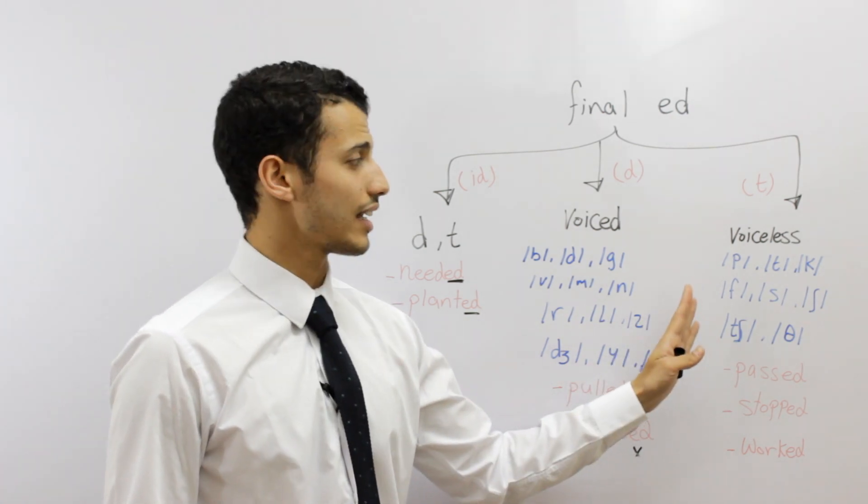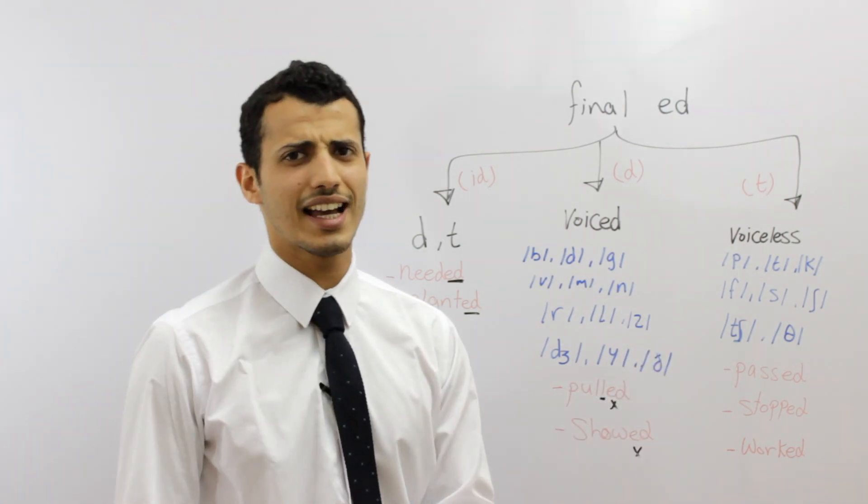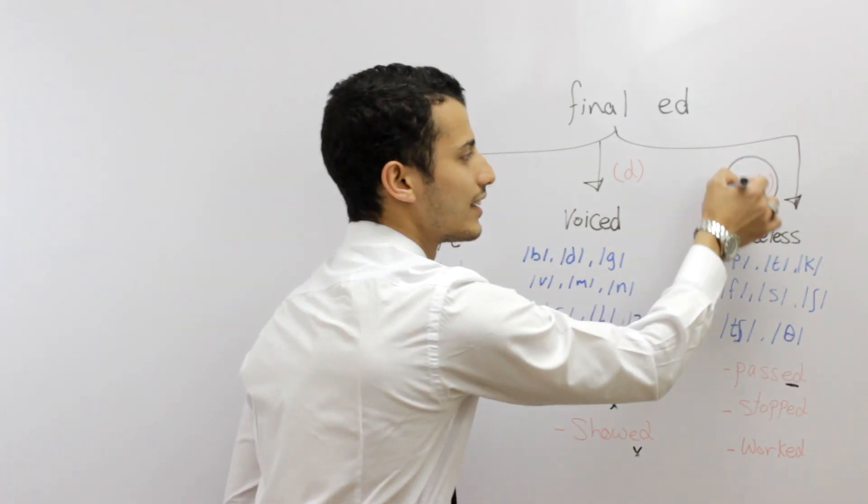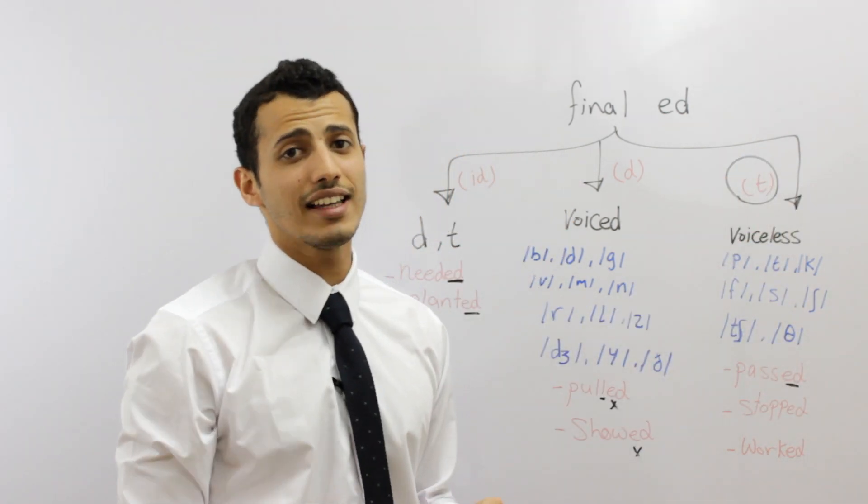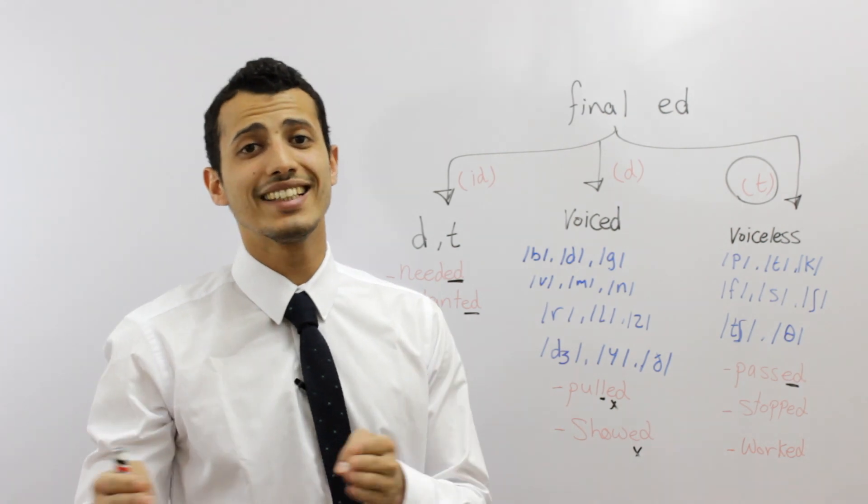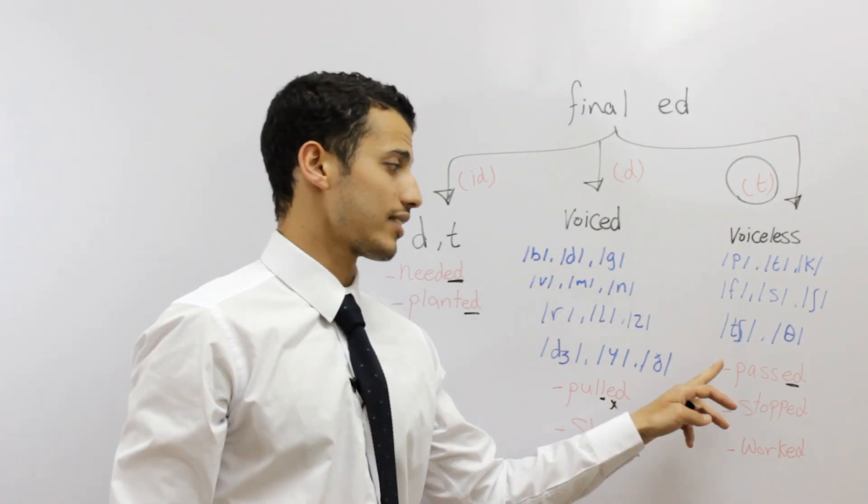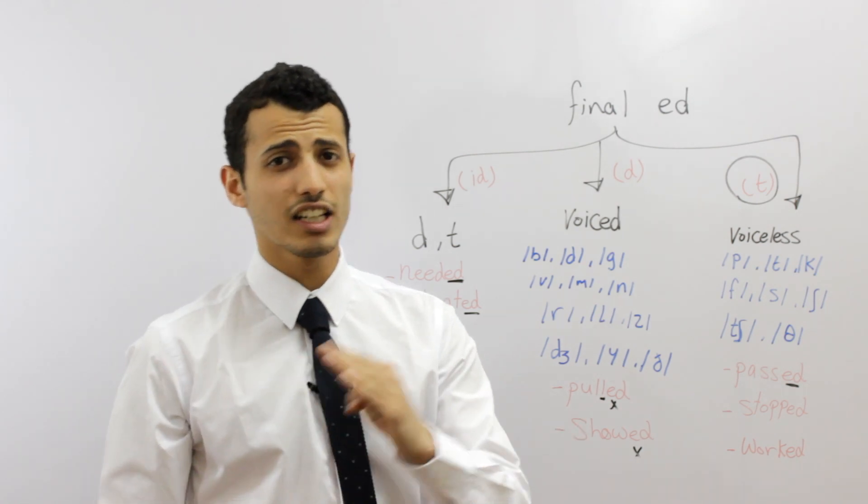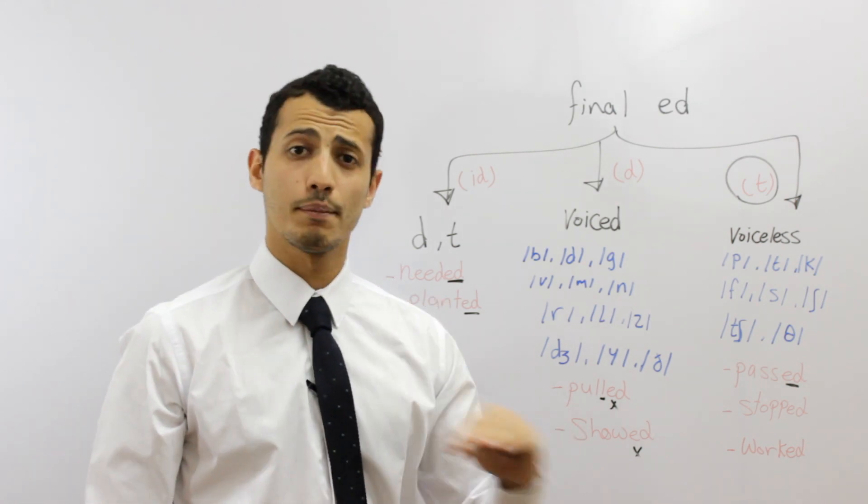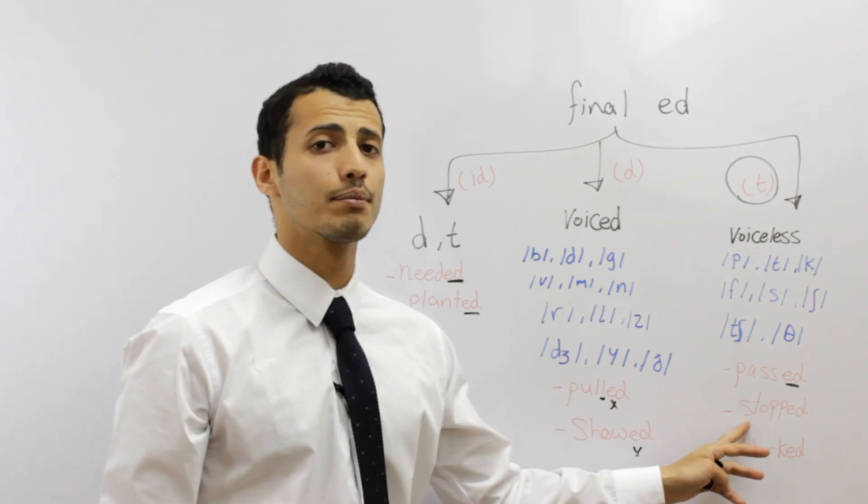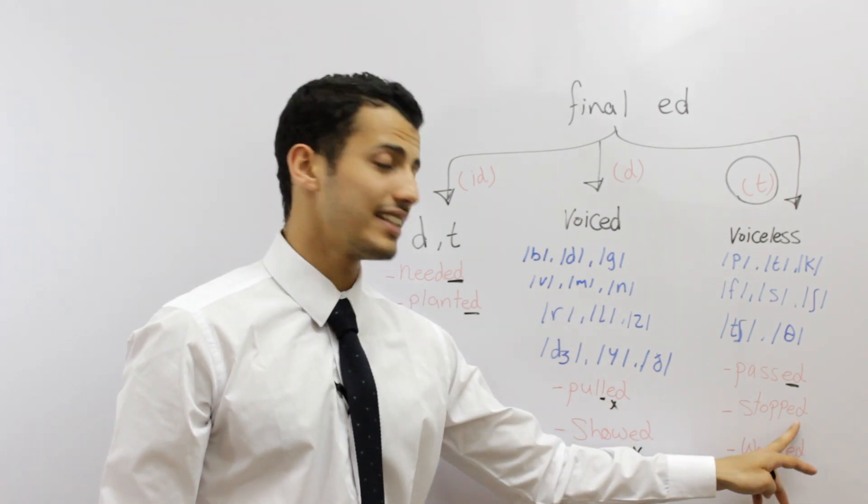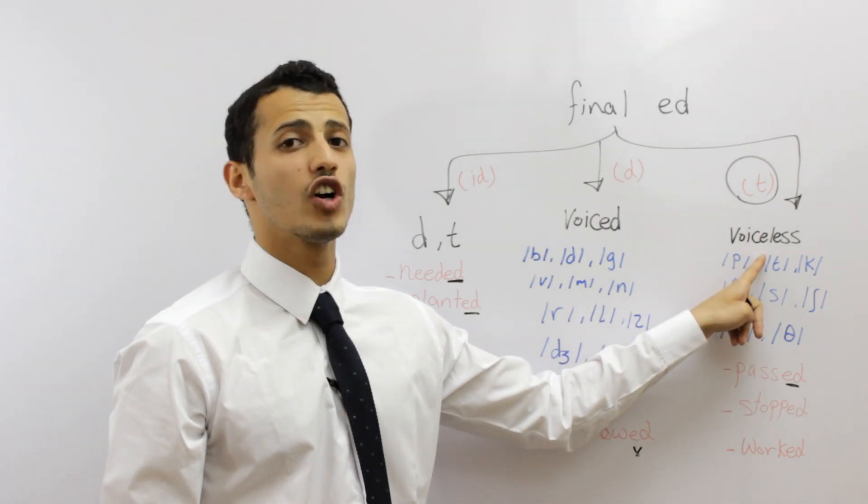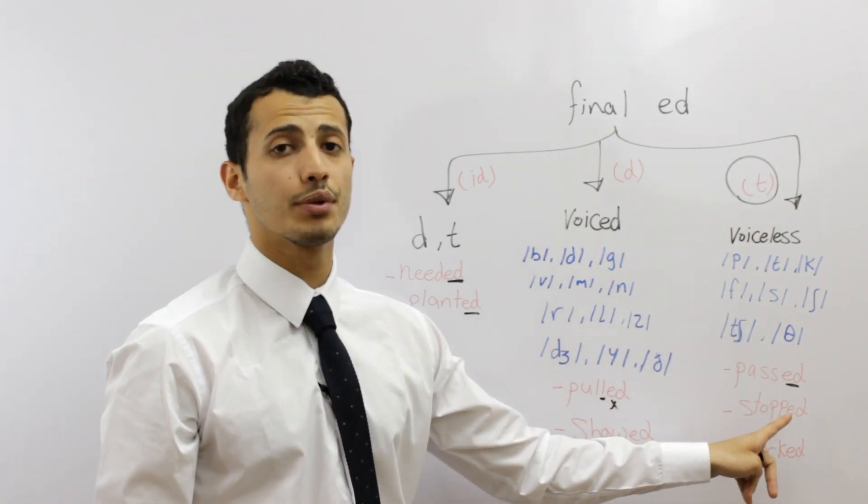For example, when we have a voiceless sound, we're going to pronounce the ED as T, the ED here will be like T, the E is silent and the D will be T. For example, we're going to say passed, passed, not pass-ed, no, passed. Or stopped, stopped, the D is T, why? It comes after a voiceless sound, which is the P.